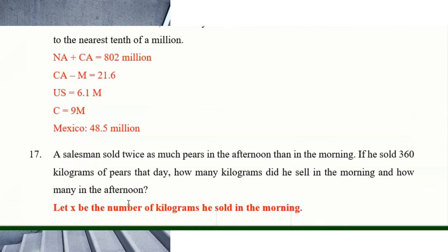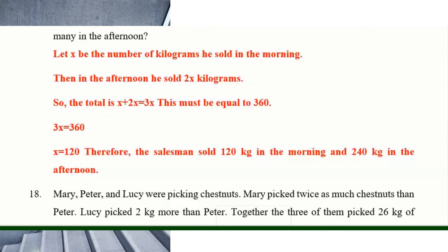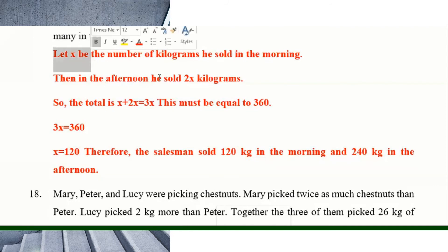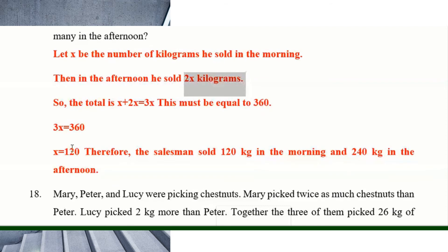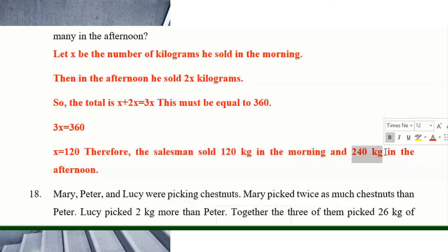Skip number 16 — not enough information to solve it. Number seventeen: a salesman sold twice as many pears in the afternoon as in the morning. He sold 360 kilograms total. Morning is x, afternoon is 2x, so x plus 2x equals 360, giving x equals 120. He sold 120 kg in the morning and 240 kg in the afternoon.